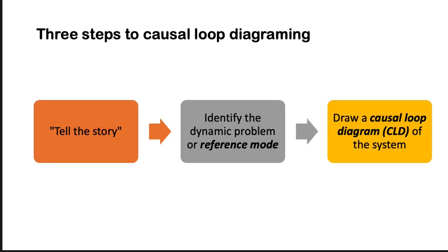Today, we'll just be focusing on how to draw causal loop diagrams. There are three general steps. First is to tell or identify the story — what is the situation you're trying to describe? The second step is to identify the dynamic problem or reference mode, which is what we're going to focus our modeling on. The third is to draw a causal loop diagram of the system — how we think the system might be generating the particular problem, and also the diagram we can use to start thinking about solutions.